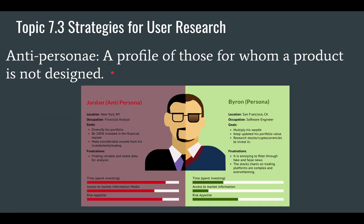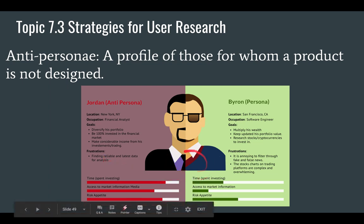An anti-persona is the profile of someone who would not be using a product — basically the person who is not the primary user of an object, or who simply would not use it at all. Here's an example: here's Jordan, the anti-persona, and here's Byron, the persona. This has to do with investing — you would look at this and create the anti-persona as well as the persona.